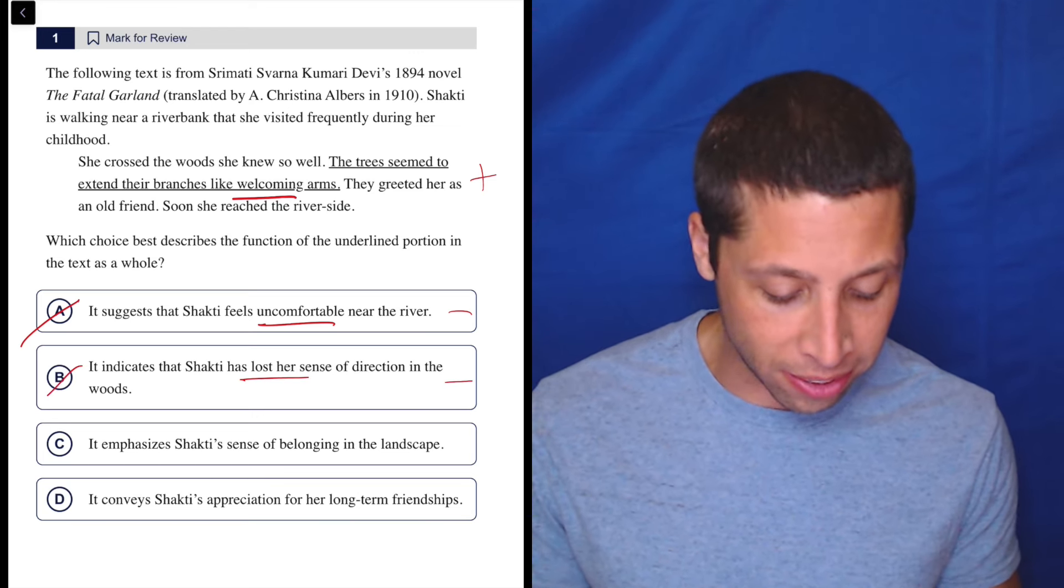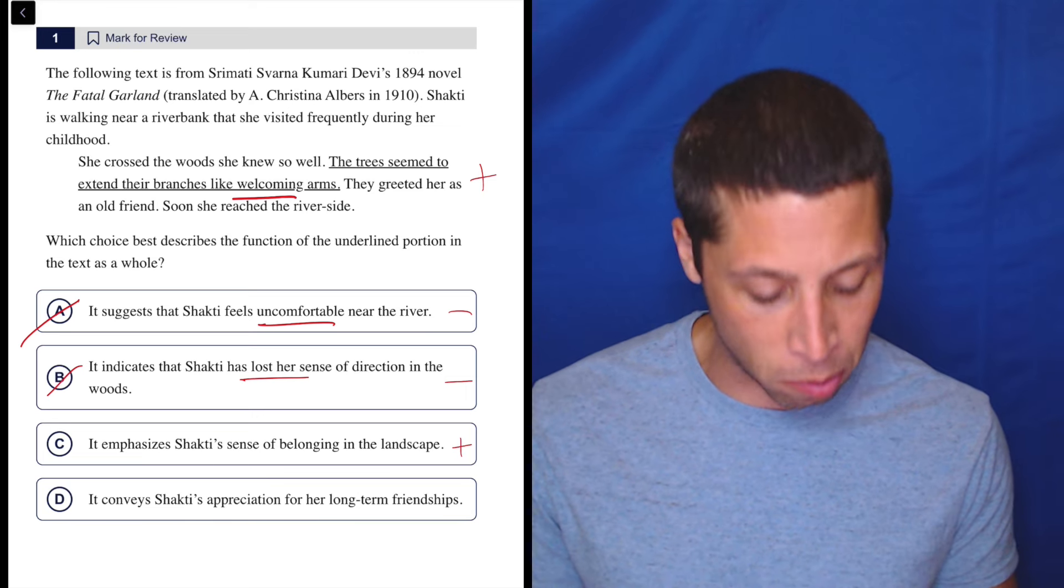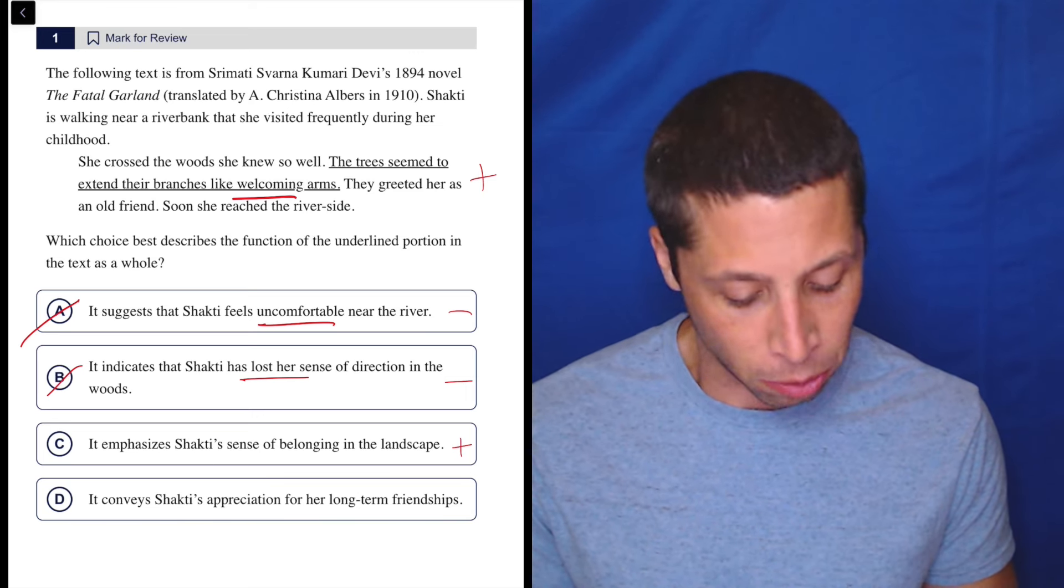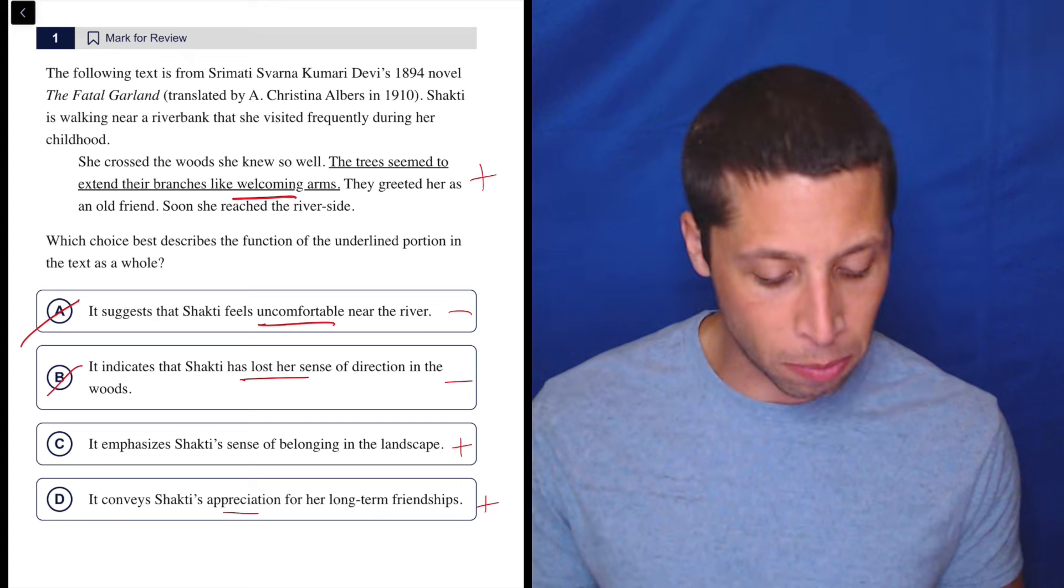Now C, it emphasizes Shakti's sense of belonging in the landscape - that seems pretty good. And D, it conveys Shakti's appreciation for her long-term friendships - that also seems good.